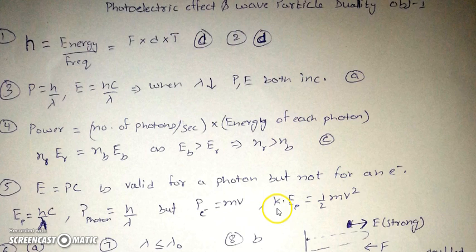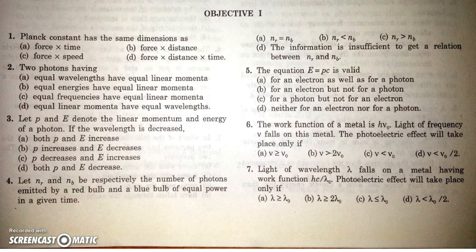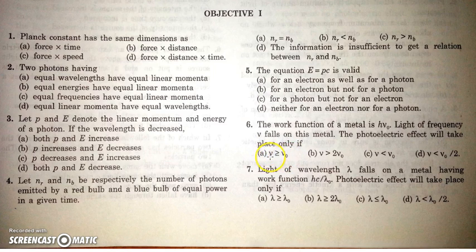Question six: the work function of a metal is hν₀, and light of frequency ν falls on this metal. Photoelectric effect will take place only when the energy of the photon is greater than or equal to the work function, so hν ≥ hν₀, which means ν ≥ ν₀.